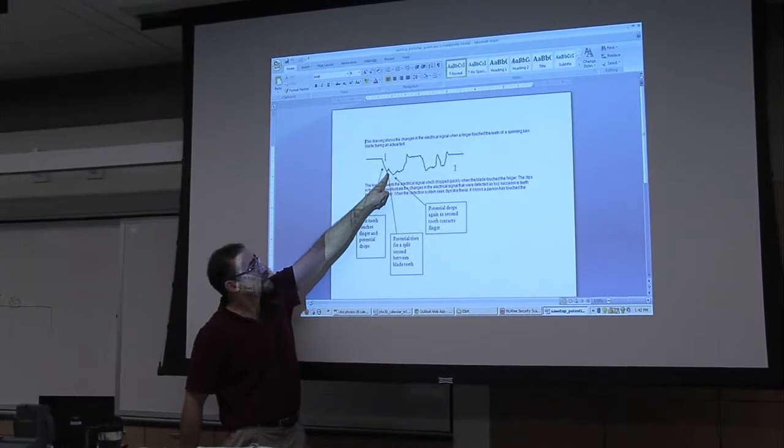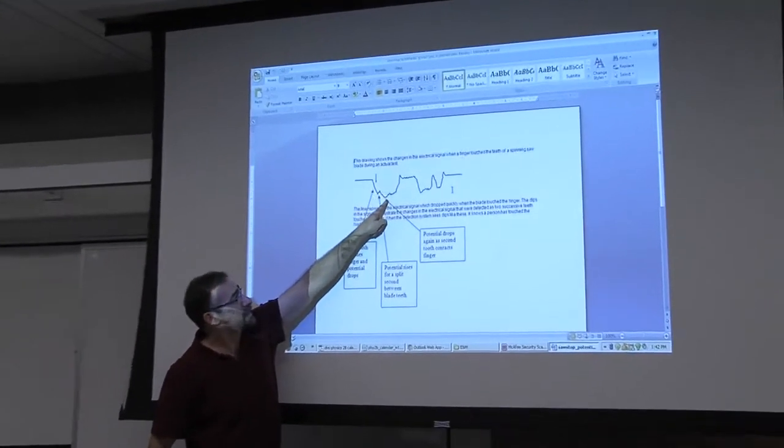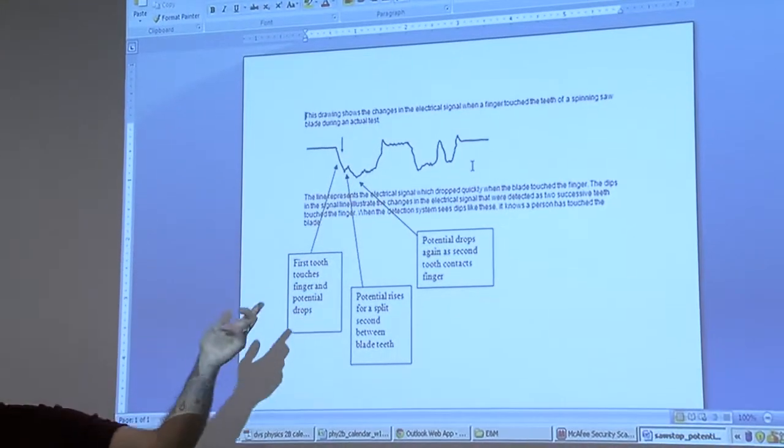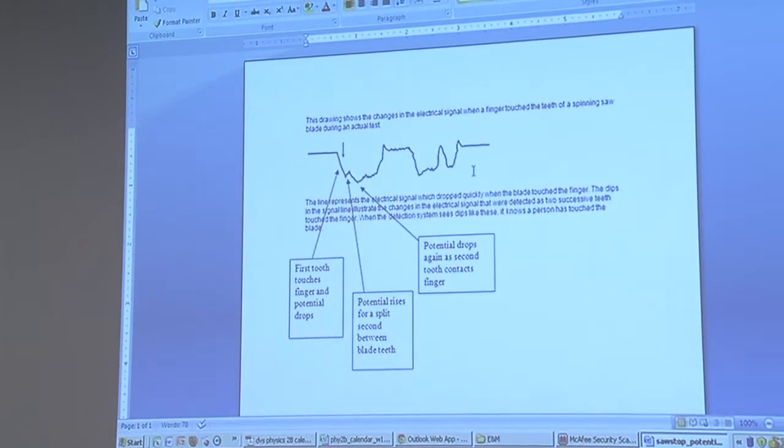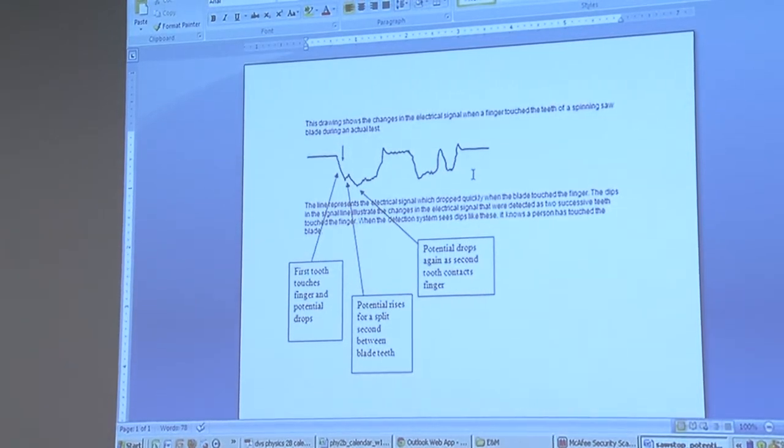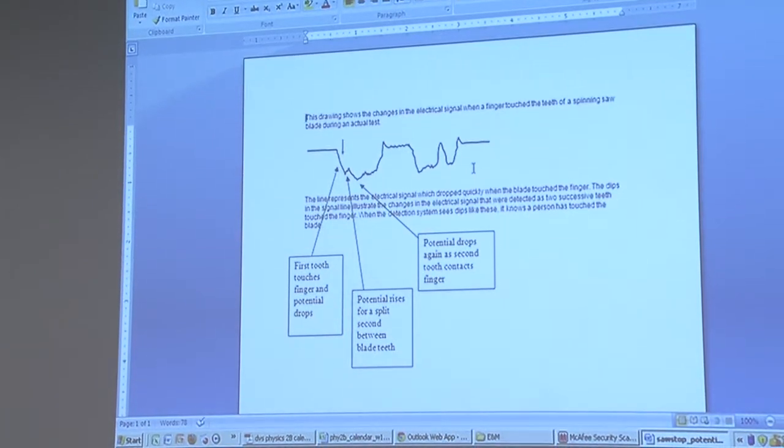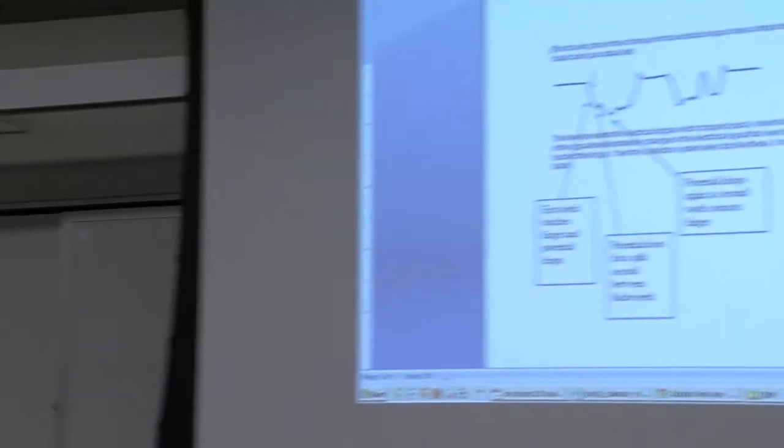That's the kind of resolution they've got on the potential signal there. It comes down. For a split second, nothing's touching your finger, and then the second tooth makes contact. That's impressive. Now he's got a technique for figuring out when your finger's touching the blade. Now he's got to stop a blade that's rotating 3,000 RPM.